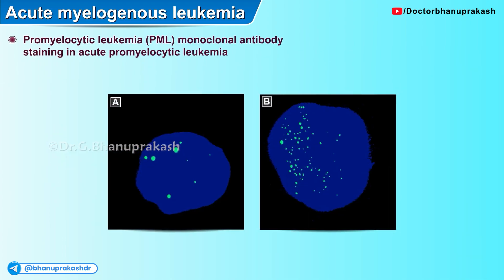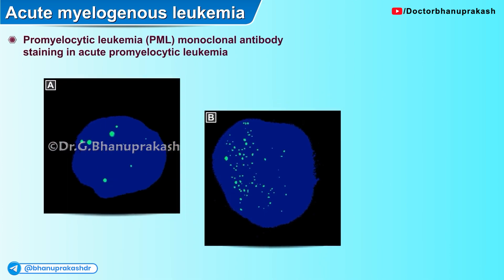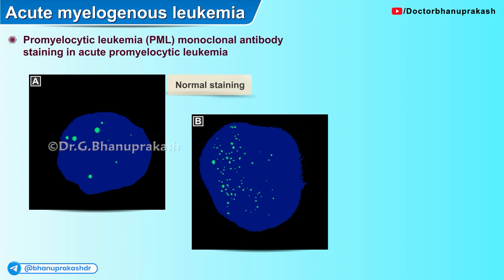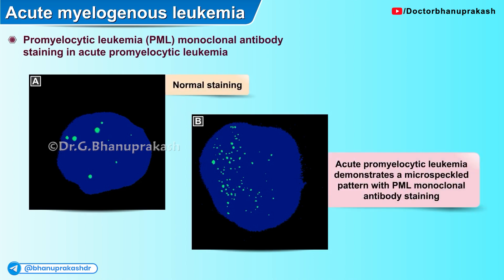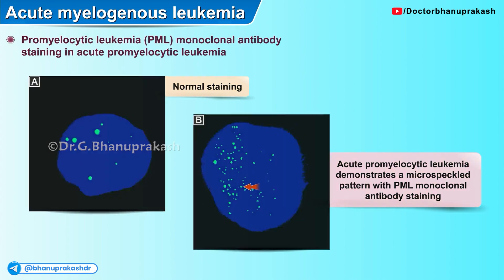Here we see the promyelocytic leukemia monoclonal antibody staining in acute promyelocytic leukemia. Panel A shows normal staining whereas panel B shows acute promyelocytic leukemia, which demonstrates a micro-speckled pattern of promyelocytic leukemia monoclonal antibody staining.